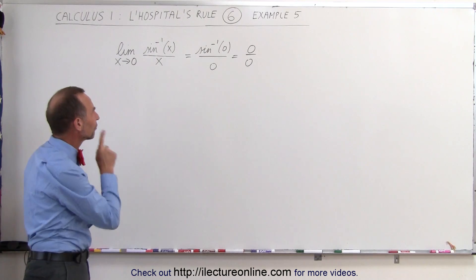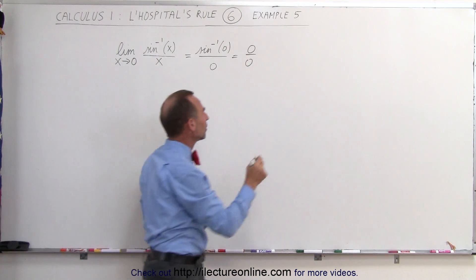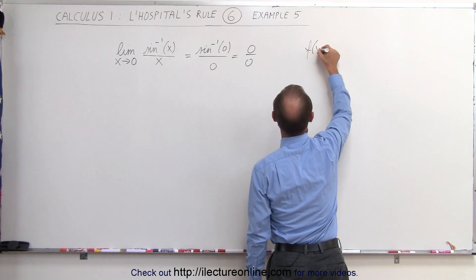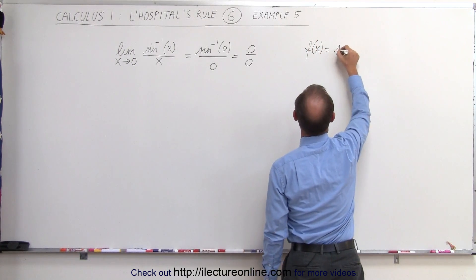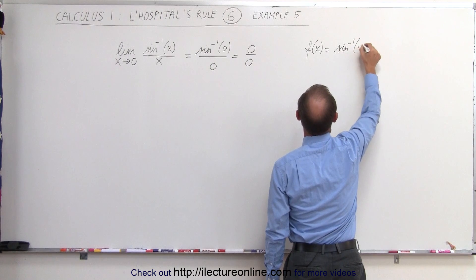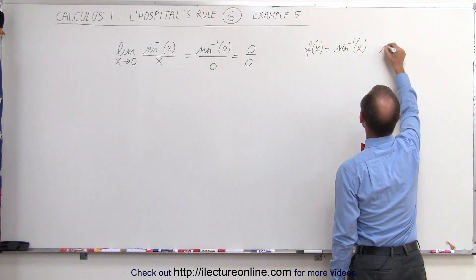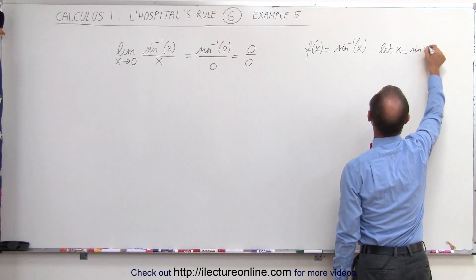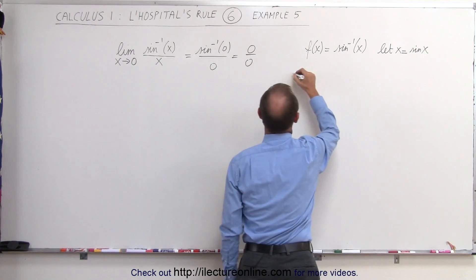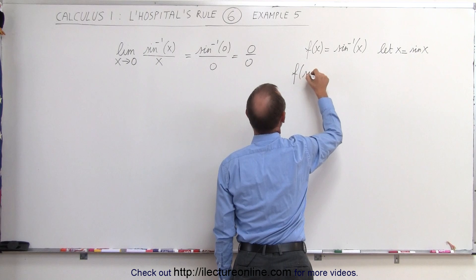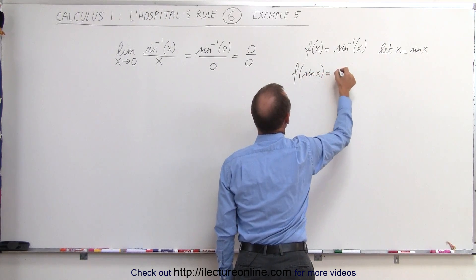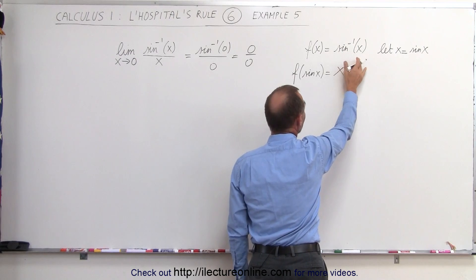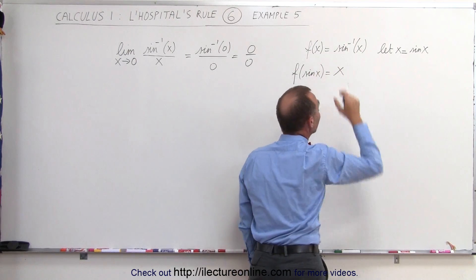So how do you take the derivative of the inverse sine of x? Let's come over here. We have the function f of x equal to the inverse sine of x. Now if we let x equal the sine of x and plug that in, then f of sine of x is going to equal x, because this is the inverse sine — so we put in the sine of x and we get x back.